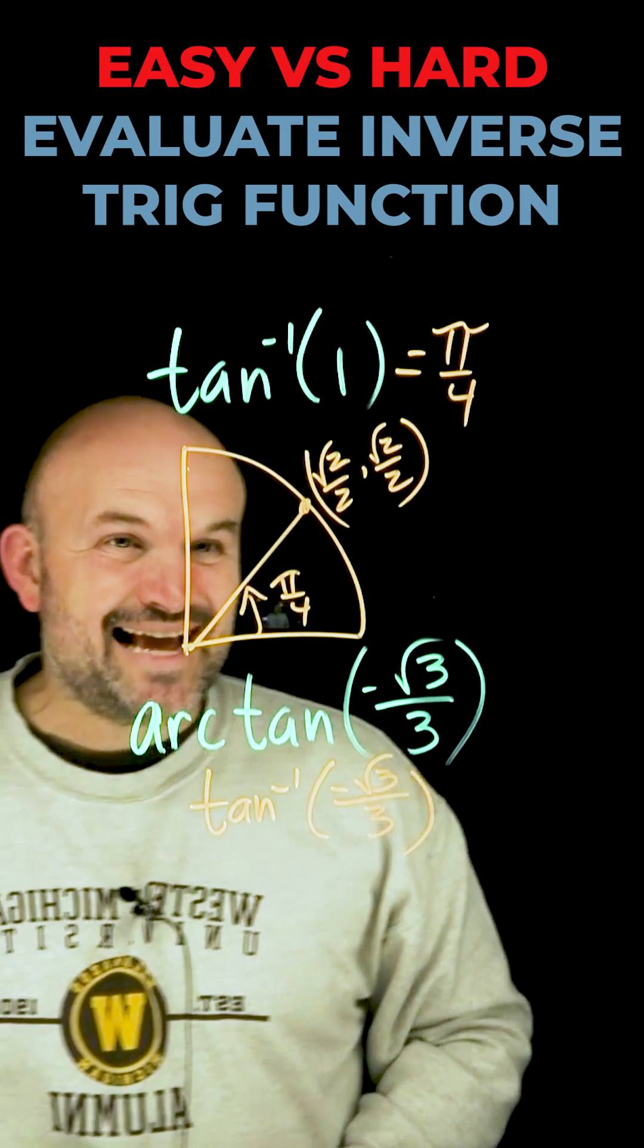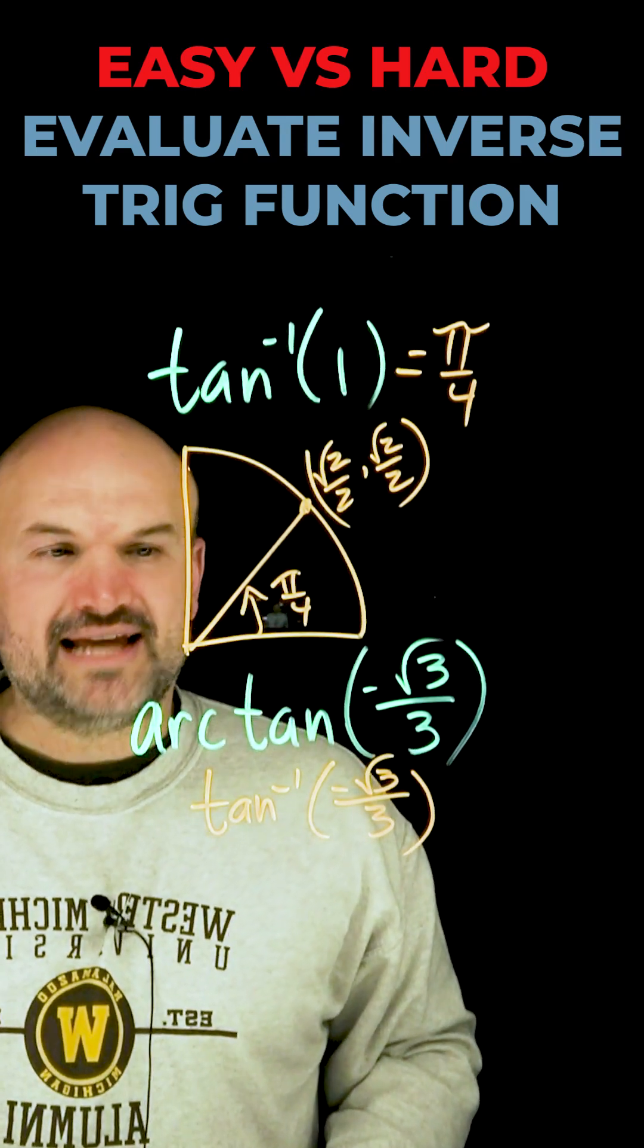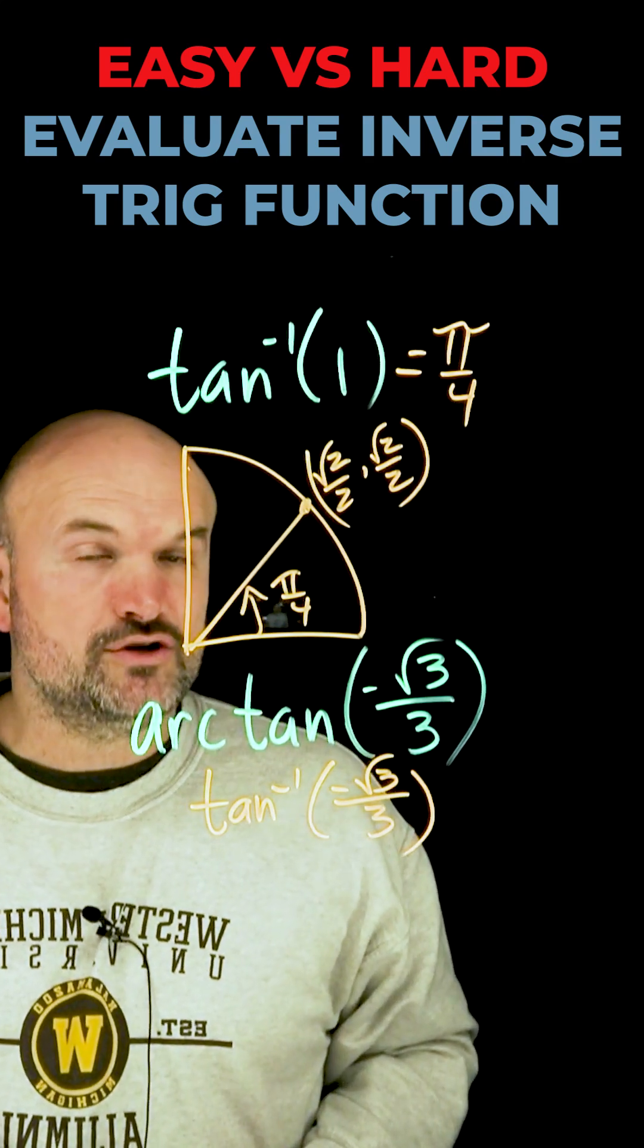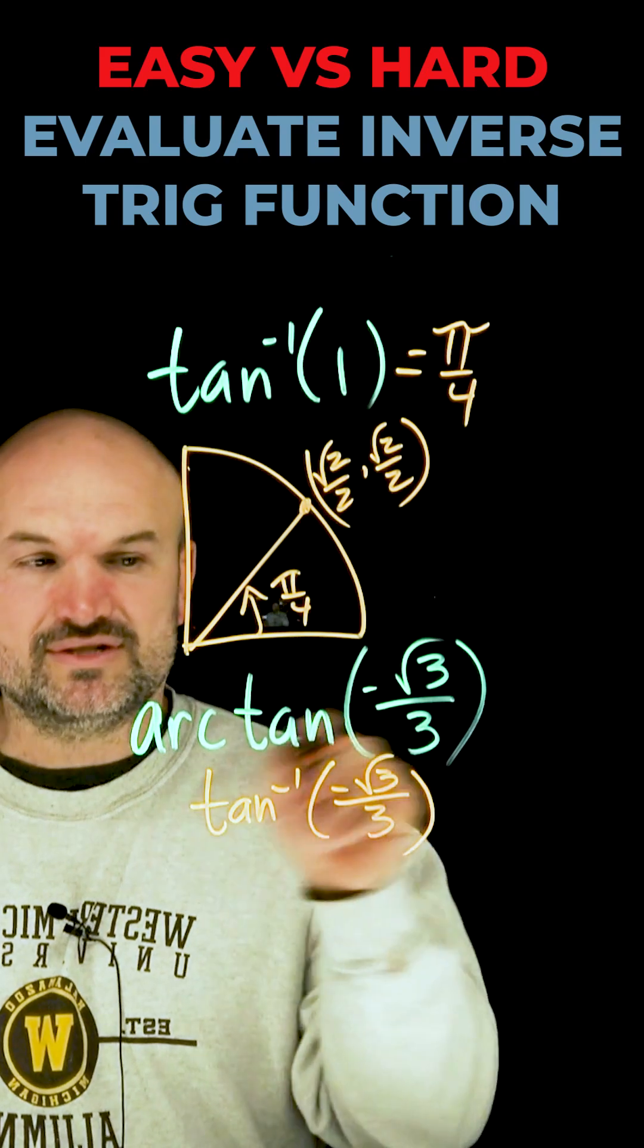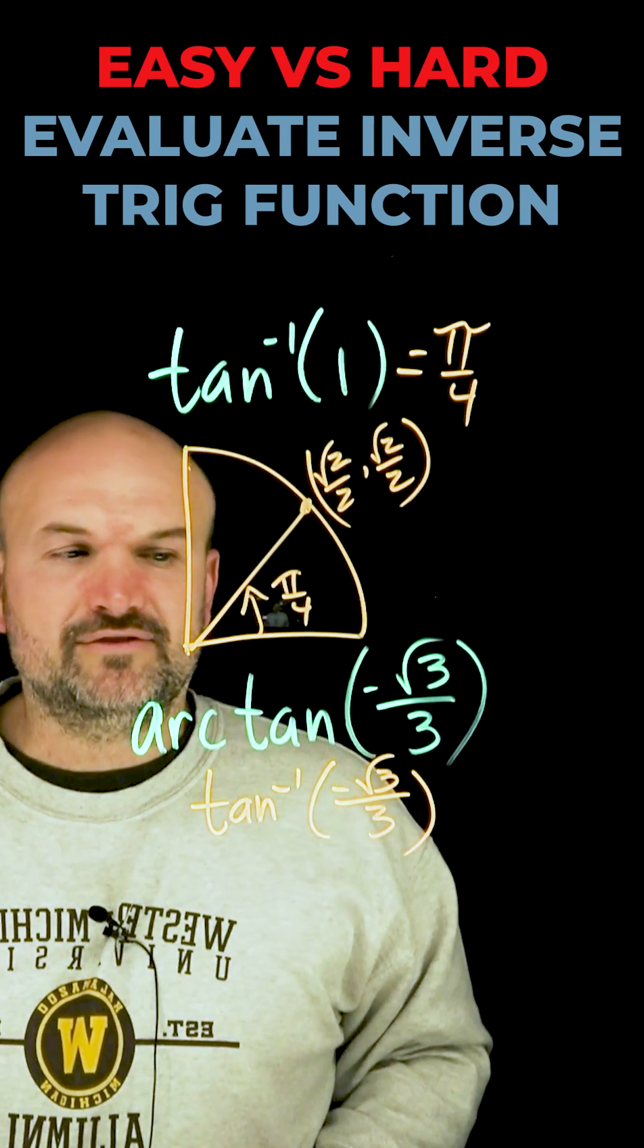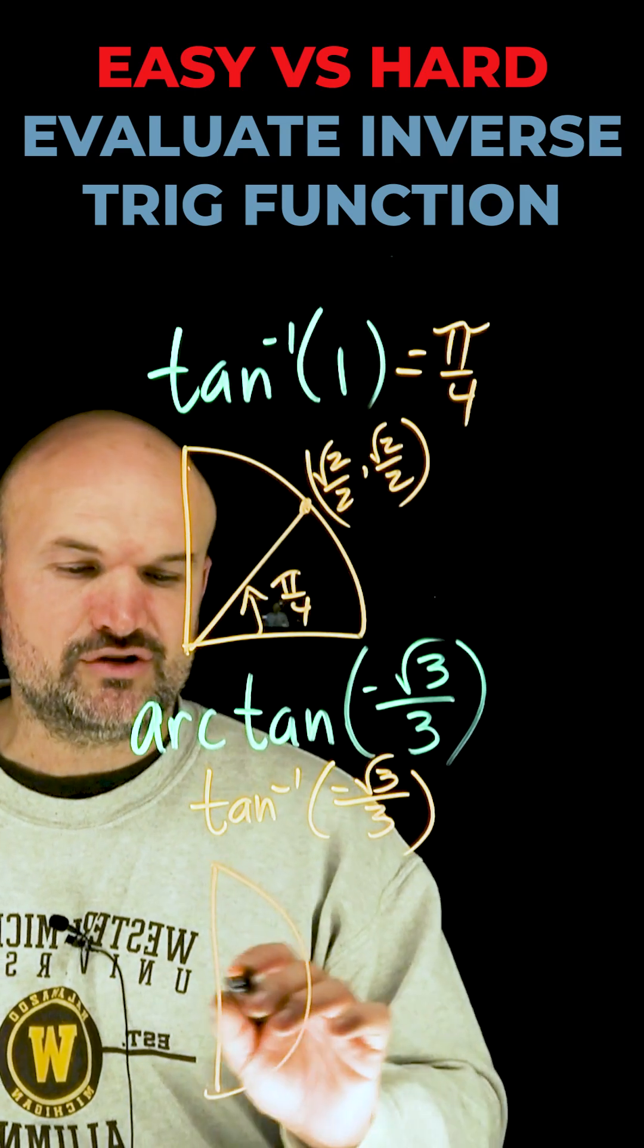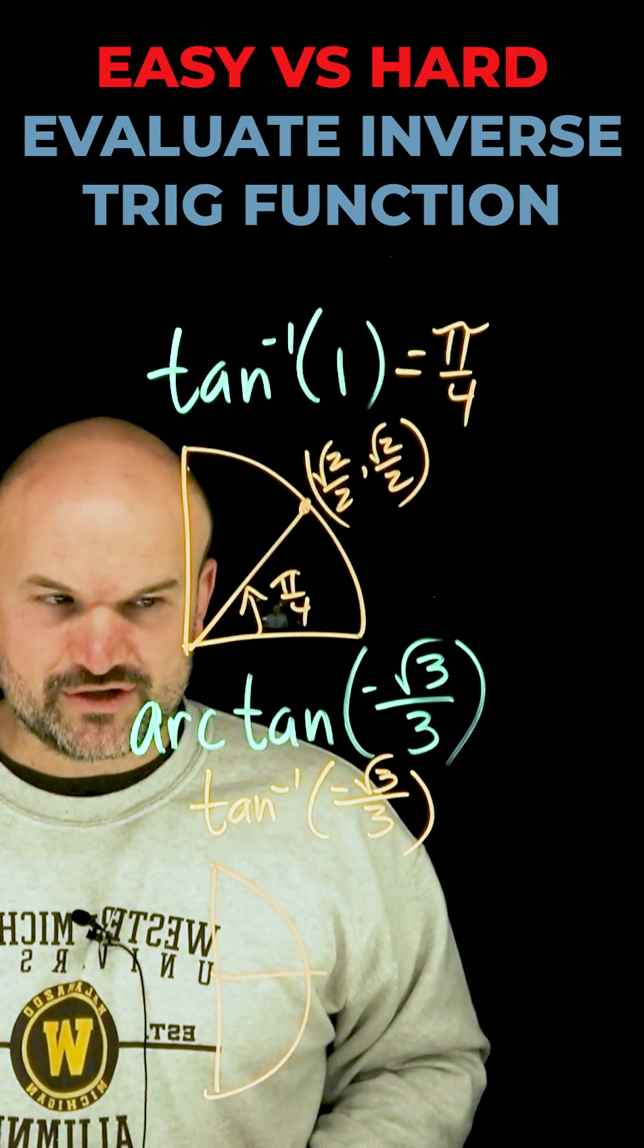The next part is going to be the negative, because one thing we need to understand is when we're doing the inverse tangent, we have restrictions here on our domain, because there's multiple angles that I would have for negative square root of 3 over 3 as my ratio. So what we need to understand is that the tangent inverse is restricted to the first and the fourth quadrant.